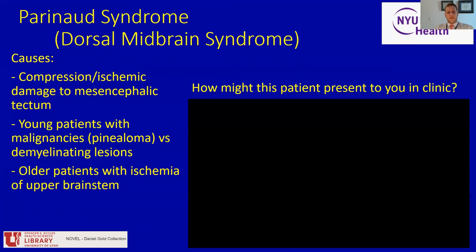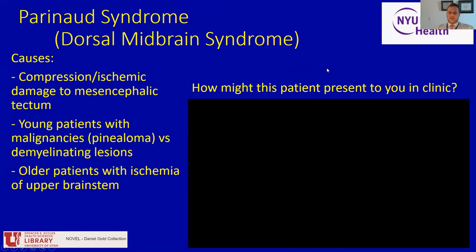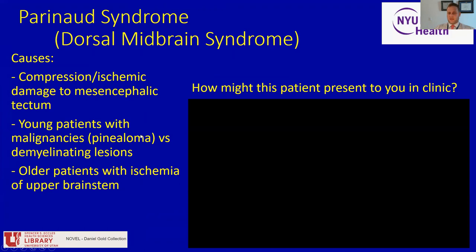How might this patient come into clinic? Sometimes people complain of a sense of their visual world jumping, especially in attempted upgaze. Because of the etiology of these symptoms, individuals can also have headache. One of the most frequent clinical scenarios in which I see Parinaud syndrome is with individuals who have a mass of the pineal gland that exerts manual compression onto the dorsal midbrain — for example, in pinealomas or PPTID, another malignancy of the pineal gland. You can also have ischemic damage or demyelinating lesions of the dorsal midbrain that can result in Parinaud syndrome.